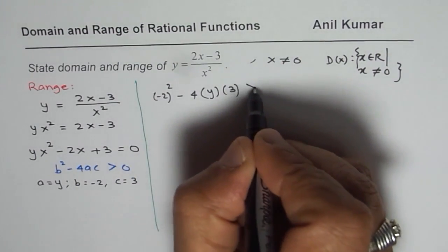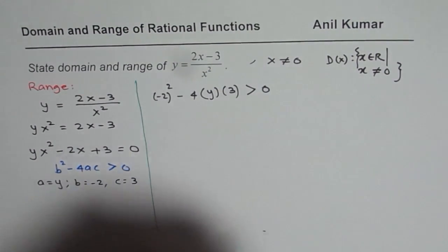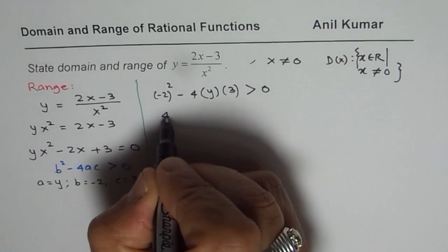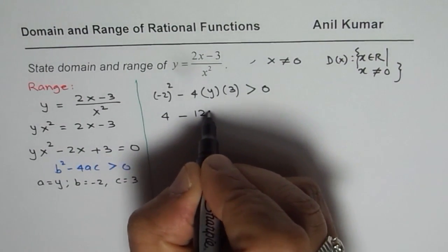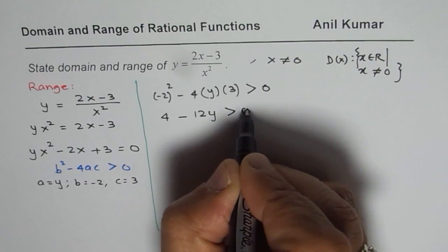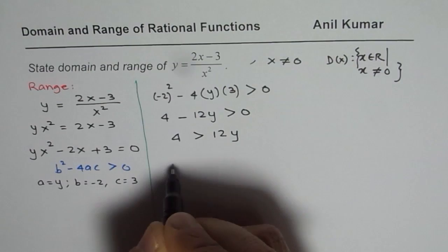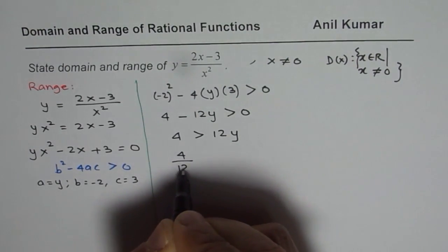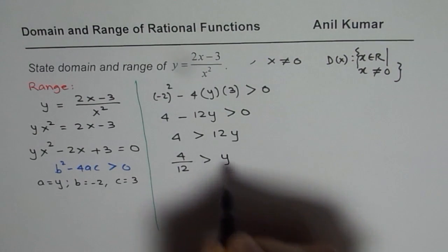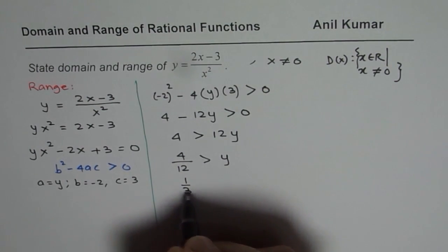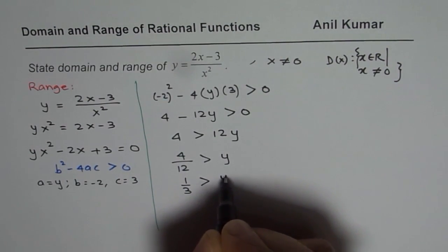That should be greater than 0. Now that gives us 4 minus 12y should be greater than 0, or 4 should be greater than 12y, or 4 divided by 12 should be greater than y, or 1/3 should be greater than y.